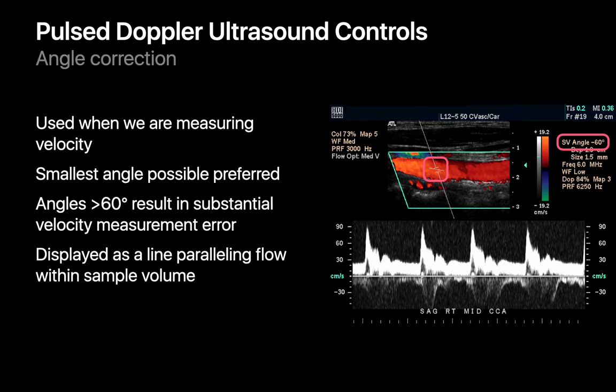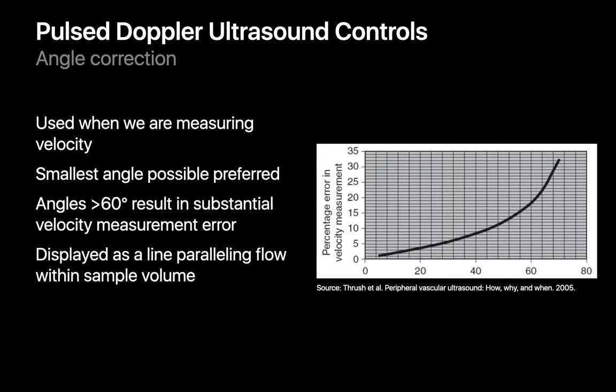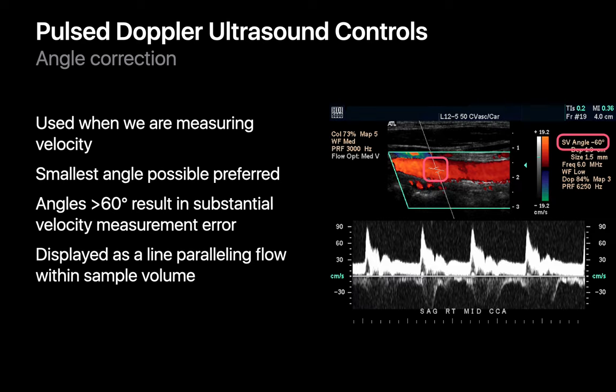Angle correction is important when you need to make an accurate flow velocity measurement. The most accurate measurements occur when the direction of flow is perfectly parallel with the Doppler beam, but this usually isn't achievable. The greater the angle offset, the more inaccurate your velocity estimates become. Angle correction — displayed as a short thin line segment inside the sample volume box — helps the machine compensate for this error. Set the angle correction line so that it is parallel to the direction of flow.